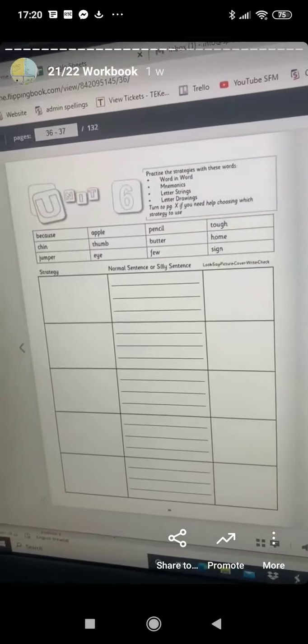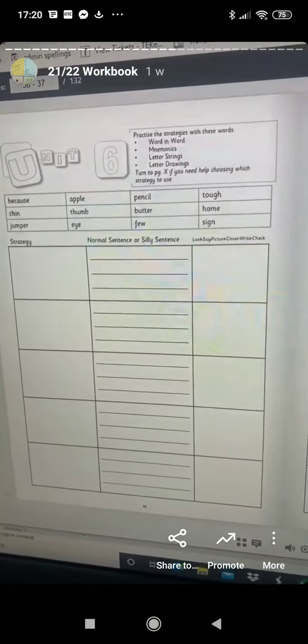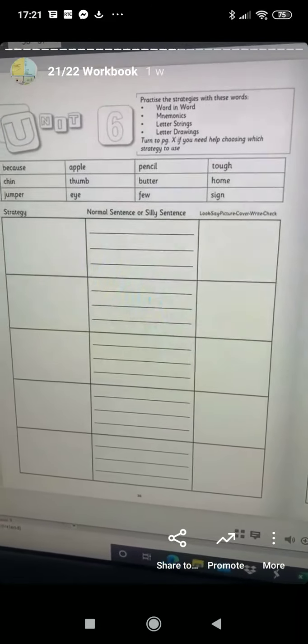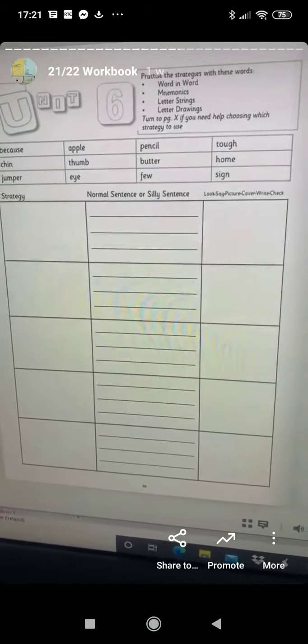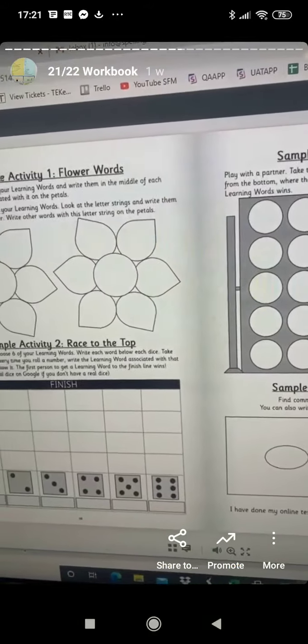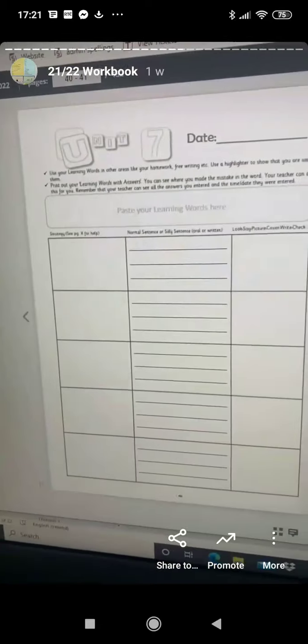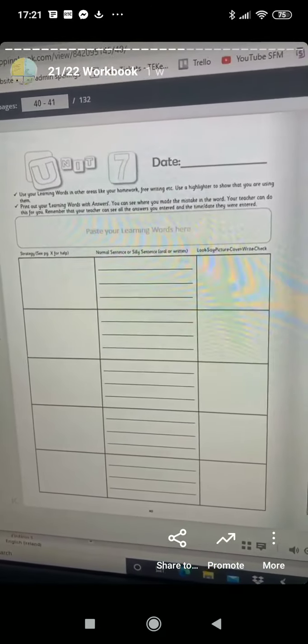Unit six is, so you get a sample grid where the children practice the same words, but it's all about practicing the strategy and practicing the activities in unit six. And then eventually in unit seven, they'll actually get to use their own individualized grids.